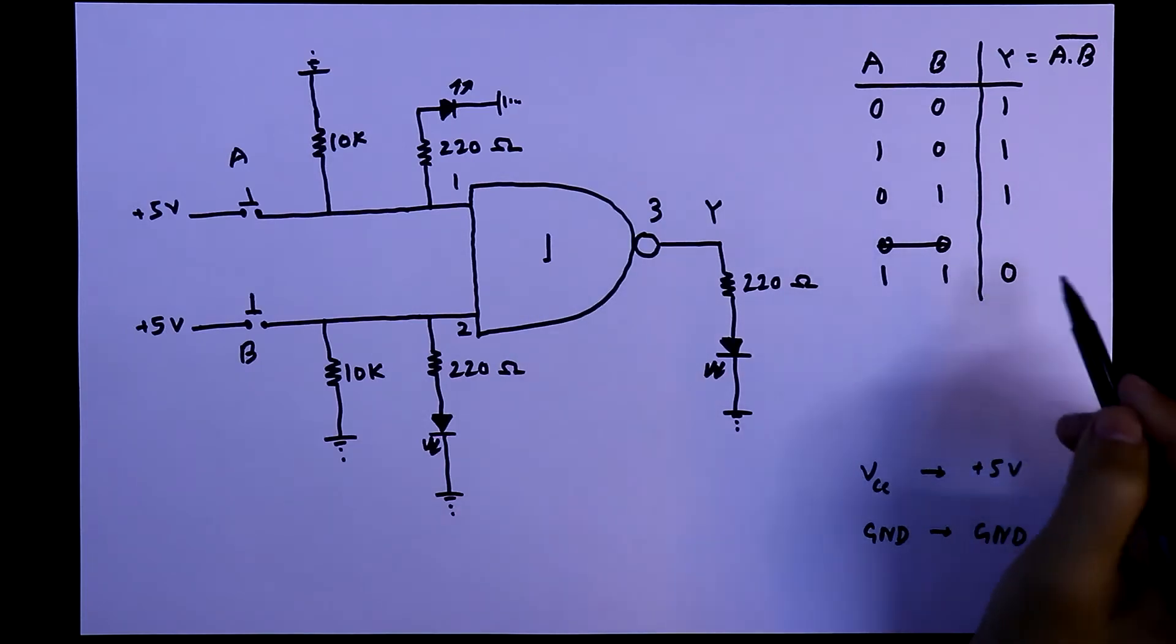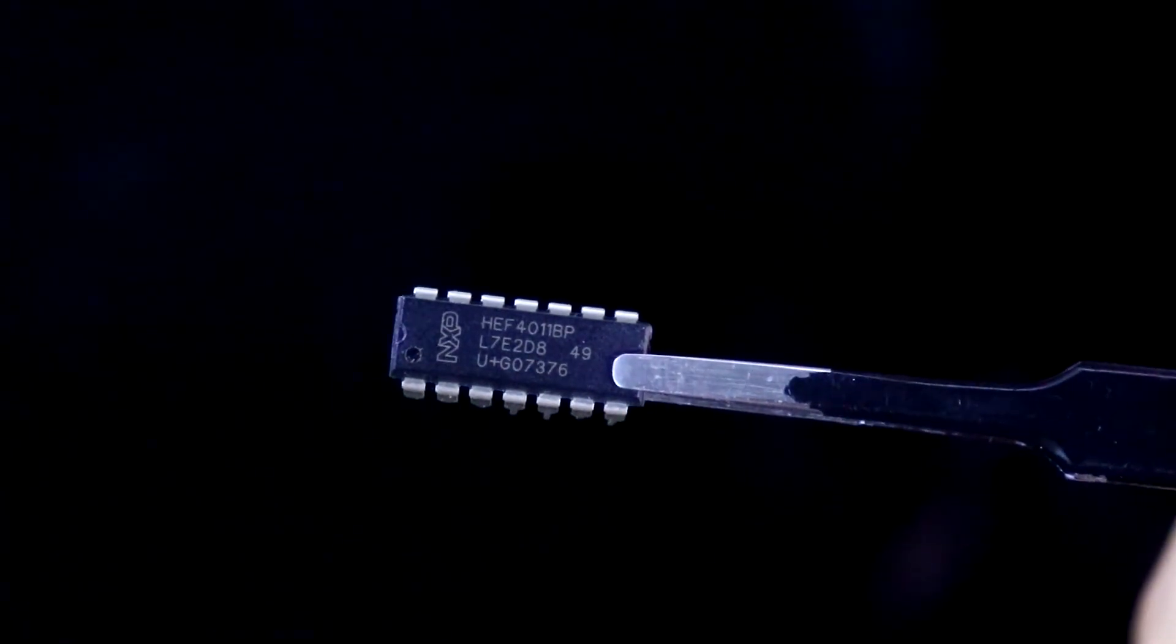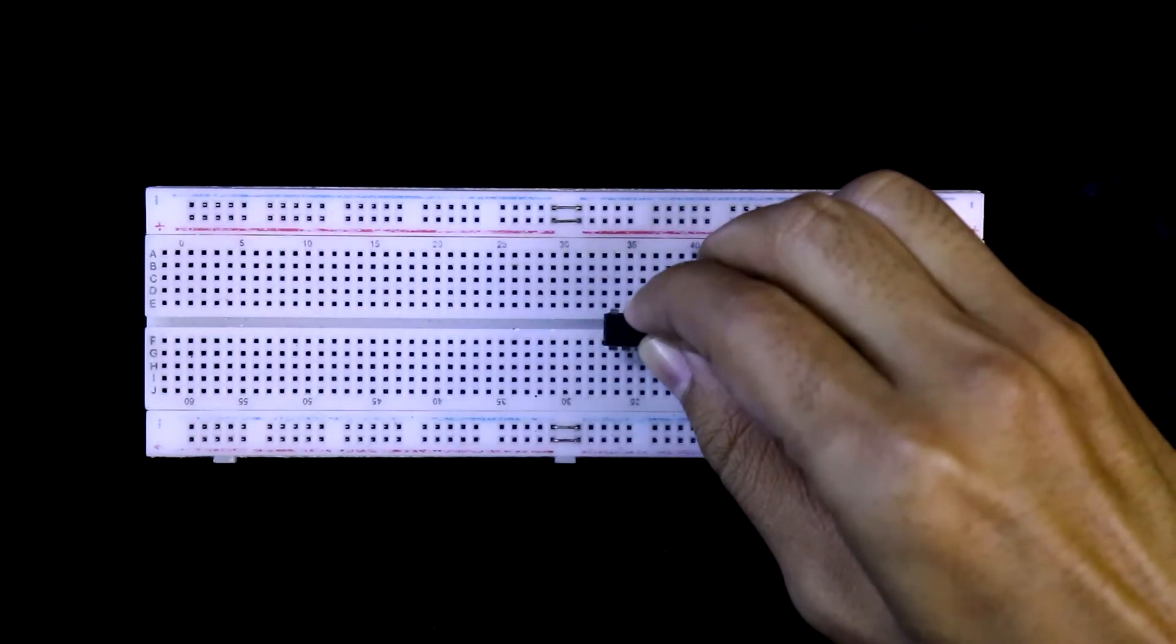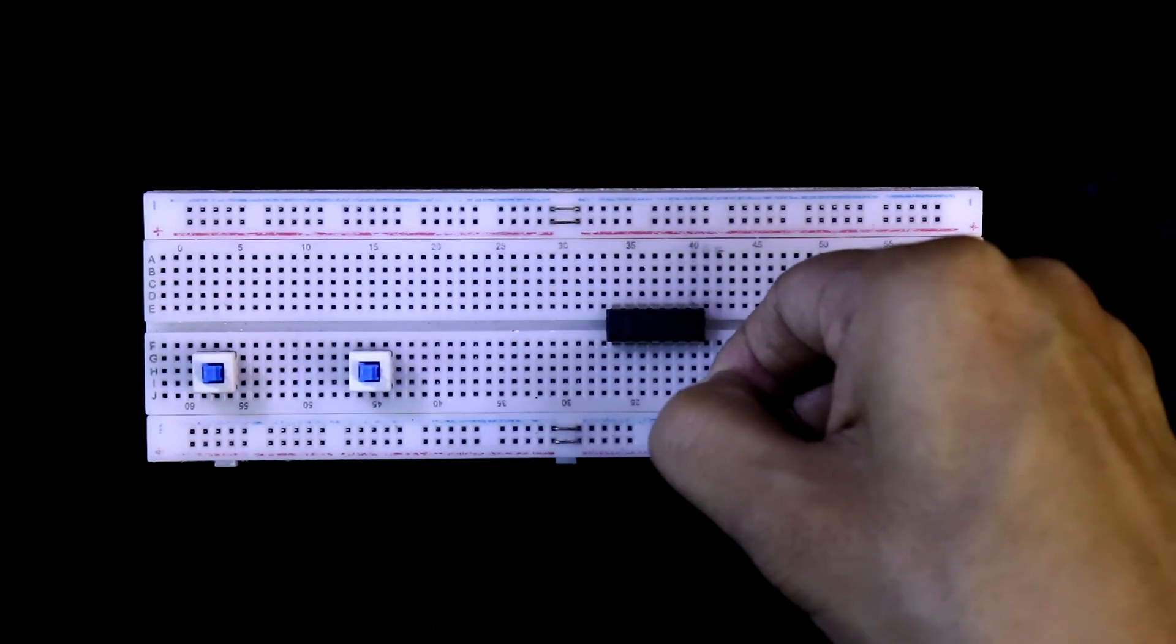So this is the truth table. Now we will verify this in breadboard. This is the IC4011 and I am putting it here. This is input A, input B. Pin number 7 is connected with ground.